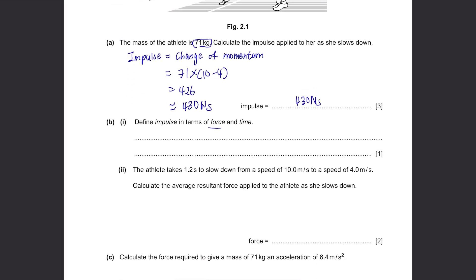Part B. Define impulse in terms of force and time. So don't write about the change of momentum. Write something about force and time. So it's impulse equals force times time. The athlete takes 1.2 seconds to slow down from a speed of 10 meters per second to a speed of 4 meters per second. Calculate the average resultant force applied to the athlete as she slows down. We know the time and the change in speed, and they just mentioned that impulse equals force times time, so we're supposed to use this formula.